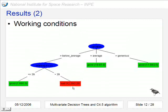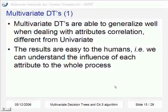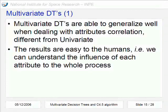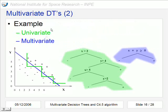Now we are going to talk about multivariate decision trees because they are able to generalize well when dealing with attribute correlation. That is not the case of the univariate approach. The univariate approach was the case of C4.5 algorithm. And also in the univariate approach the results are easy for humans. We can understand the influence of each attribute to the whole process.